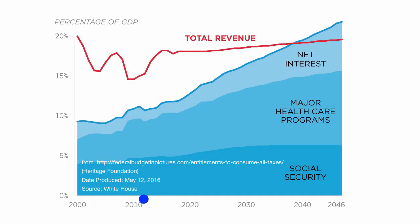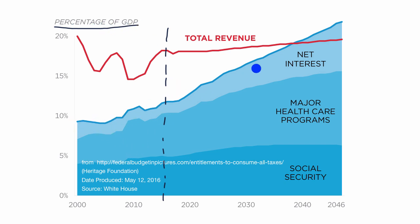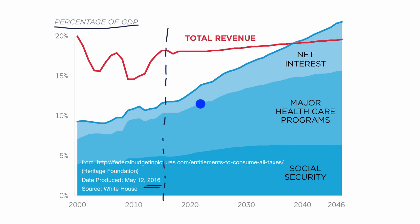This chart was created in 2016 and projects well into the future. Mandatory outlays as a percentage of GDP are growing and growing and expected to keep on growing, while total revenue as a percentage of GDP is expected to stay flat. Take all of this with a grain of salt — it's based on assumptions at the time. If economic growth varies, tax policies change, or if there are changes to entitlement programs like Social Security or healthcare, this diagram might change.